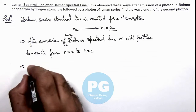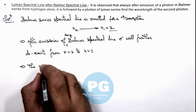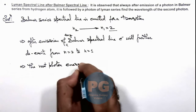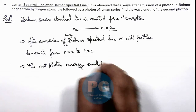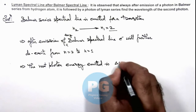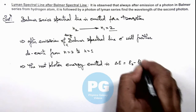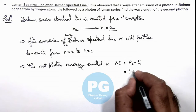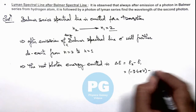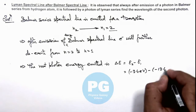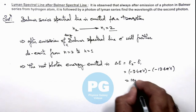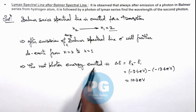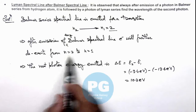This implies the next photon energy emitted corresponds to E2 minus E1, which is minus 3.4 electron volts minus minus 13.6 electron volts, which equals 10.2 electron volts. This second photon, which is always emitted after any Balmer spectral line, falls in the Lyman series.